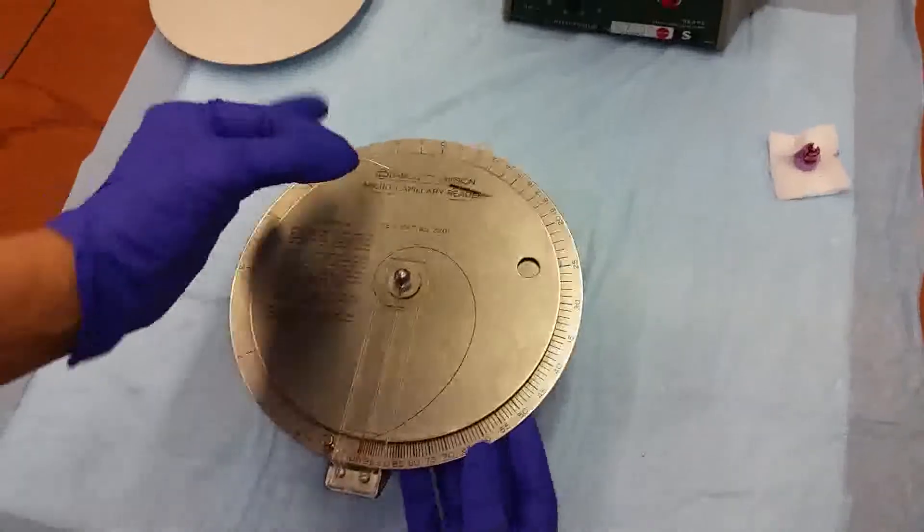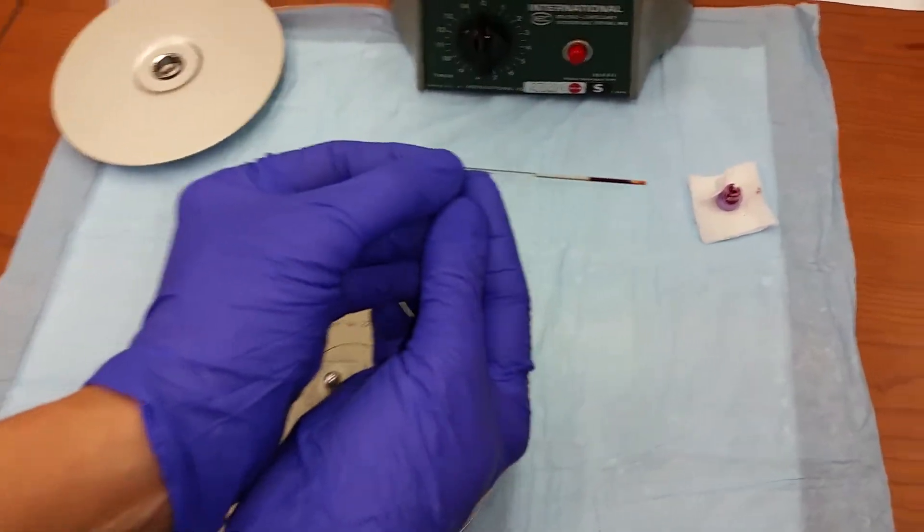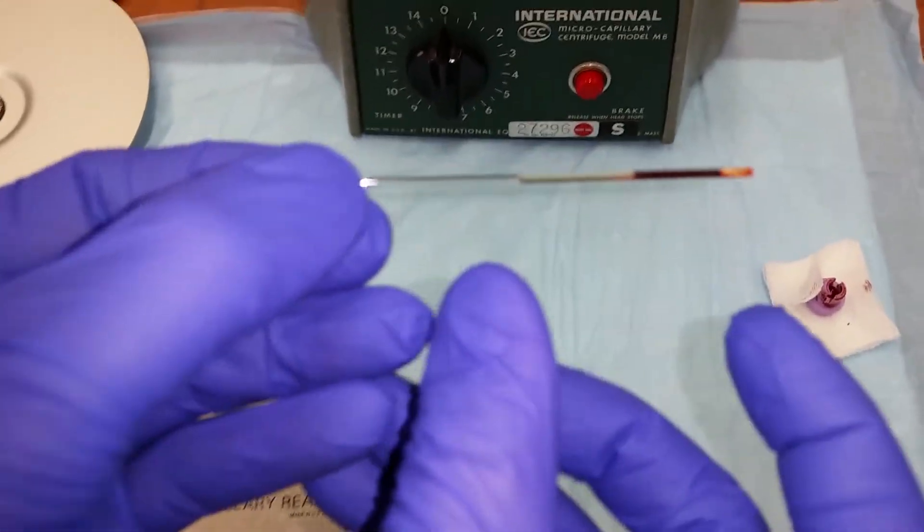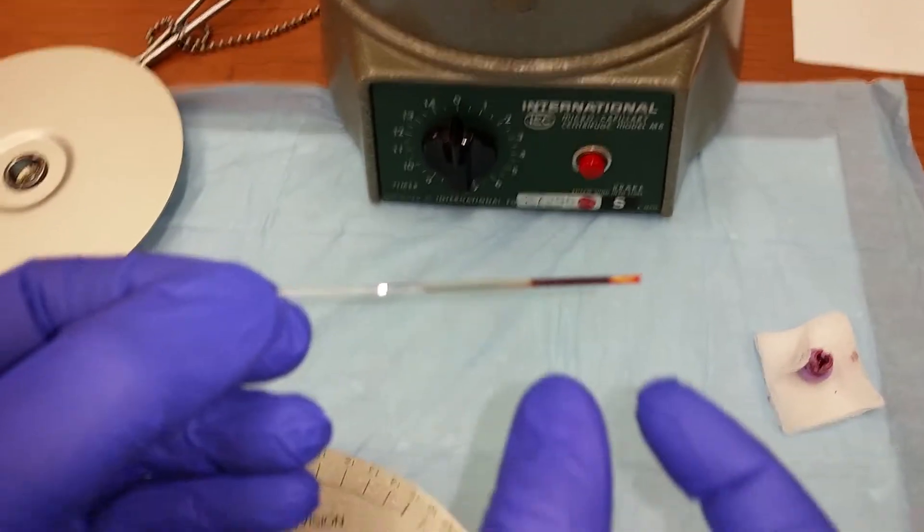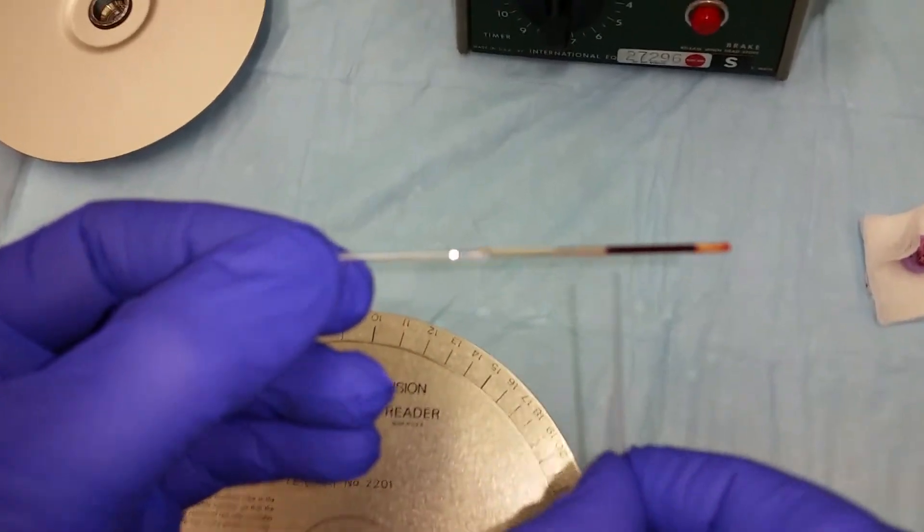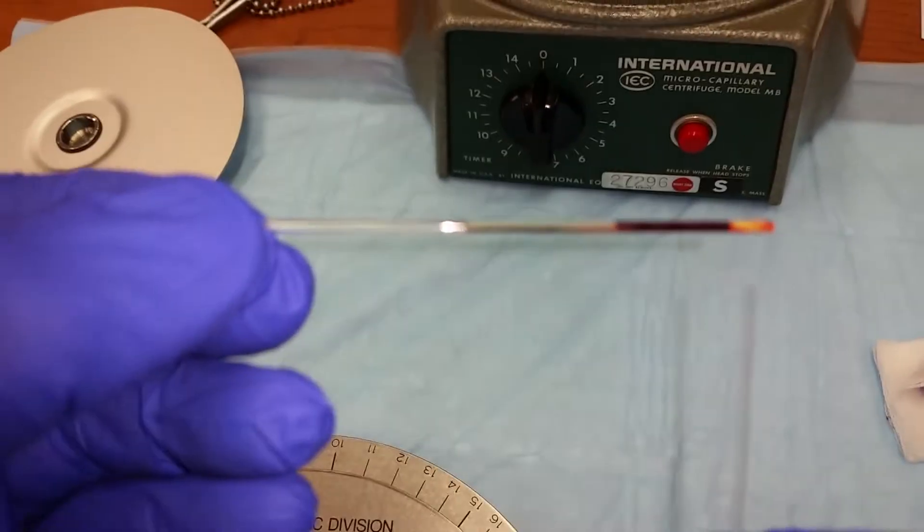We're going to use this device to measure the hematocrit, which you can actually estimate simply by looking at the column of blood and estimating what proportion the packed red blood cells is of the total blood volume.